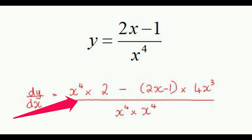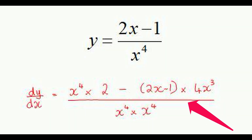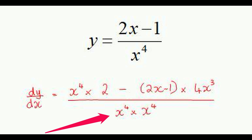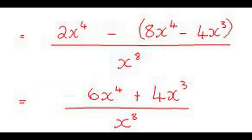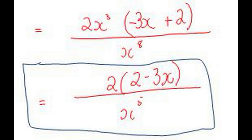It's the bottom times the derivative of the top — Hooray! Minus the top times the derivative of the bottom — Hooray! And you put it all together over denominator squared. And there you have the clever quotient rule — Hooray!